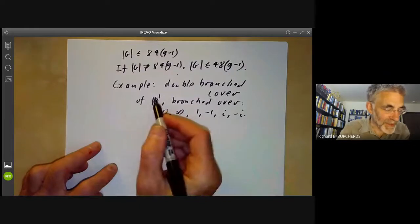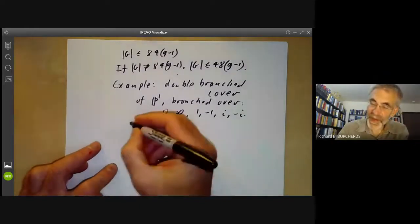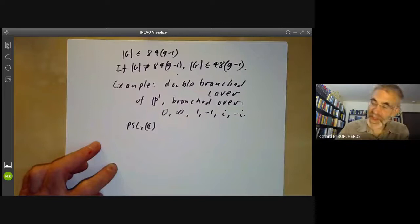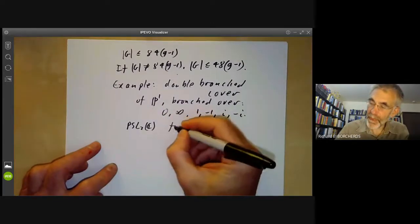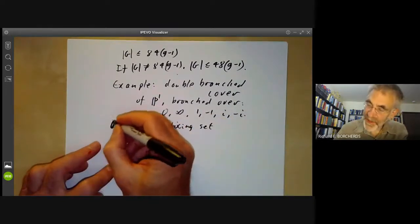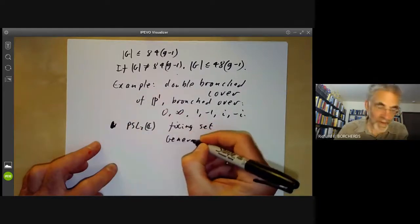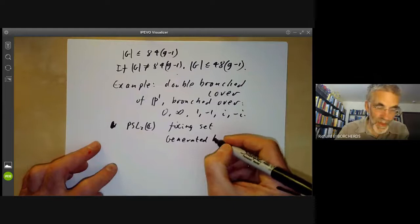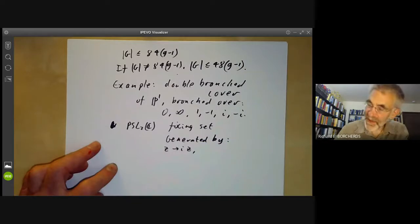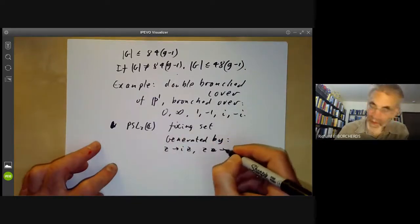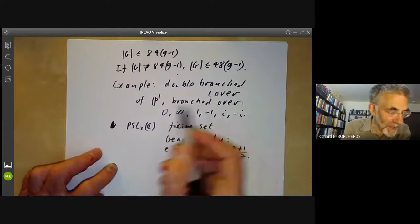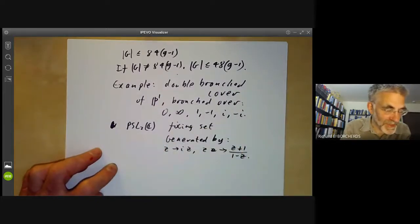So you can think of these as being something like the vertices of an octahedron if you think of P^1 as being symmetric. So the point is the subgroup of PSL(2,C) fixing this set of six points is generated by the following automorphisms: we can map z to i times z, and we can map z to z plus one over one minus z. And you can easily check these generate a group of order 24 acting on these points. In fact, it's isomorphic to the group S_4 on four points.